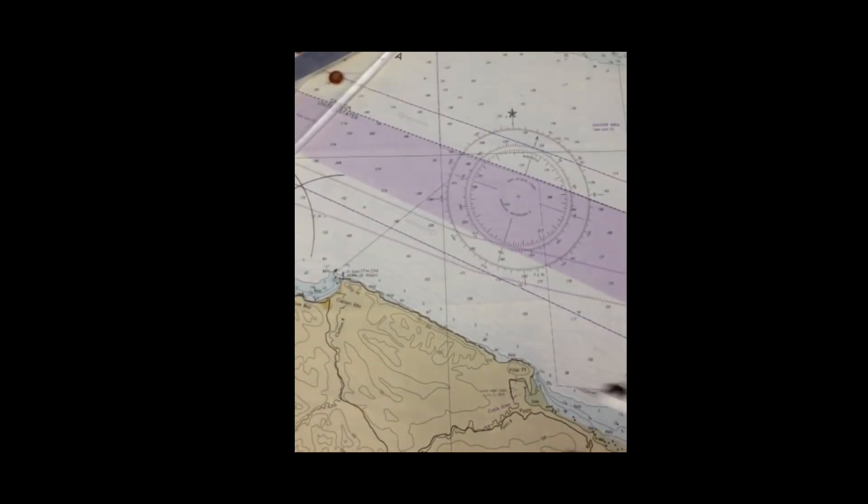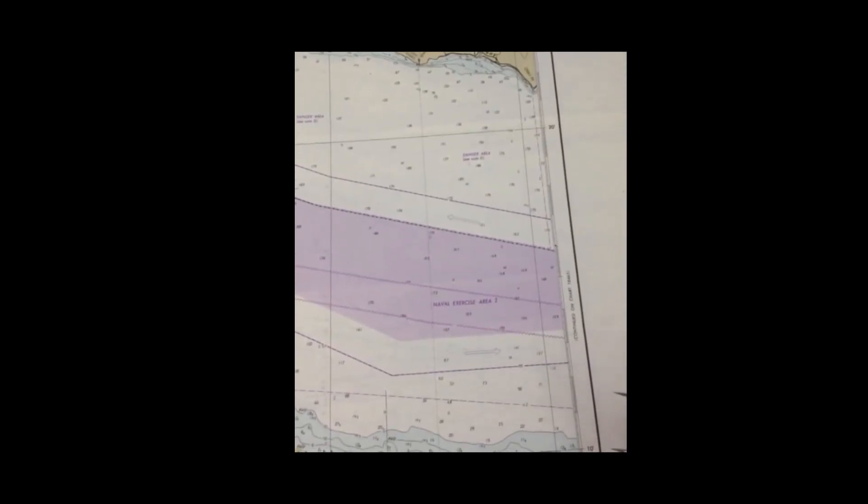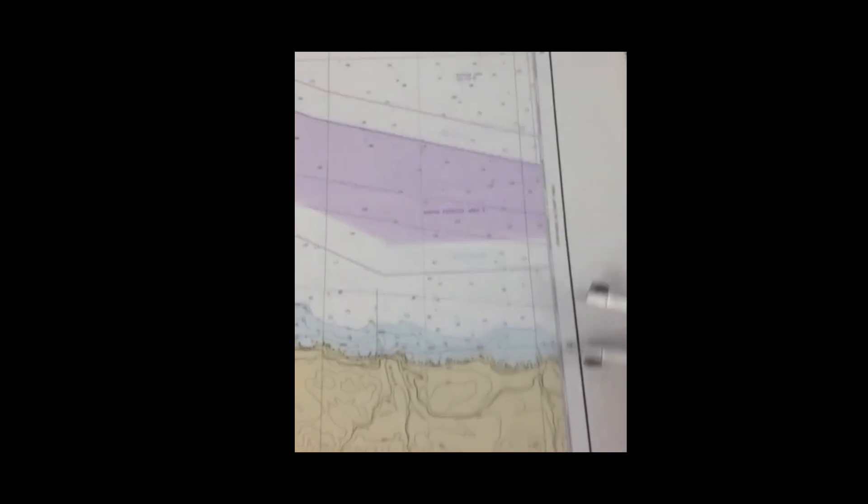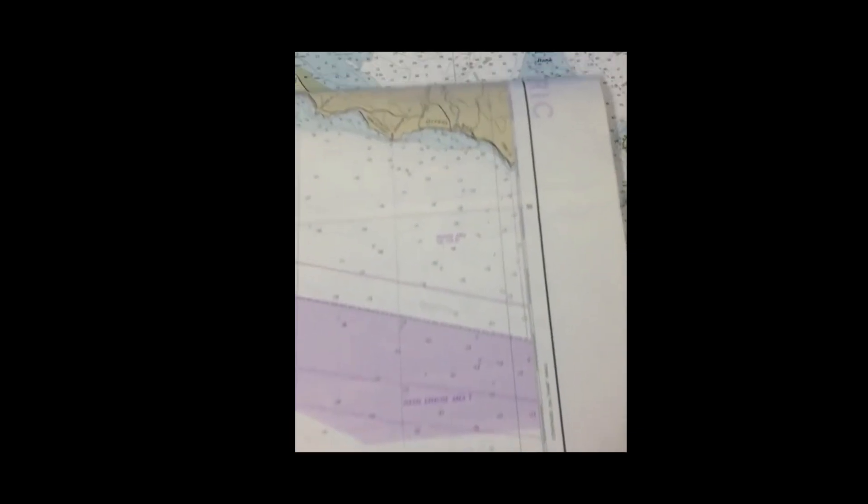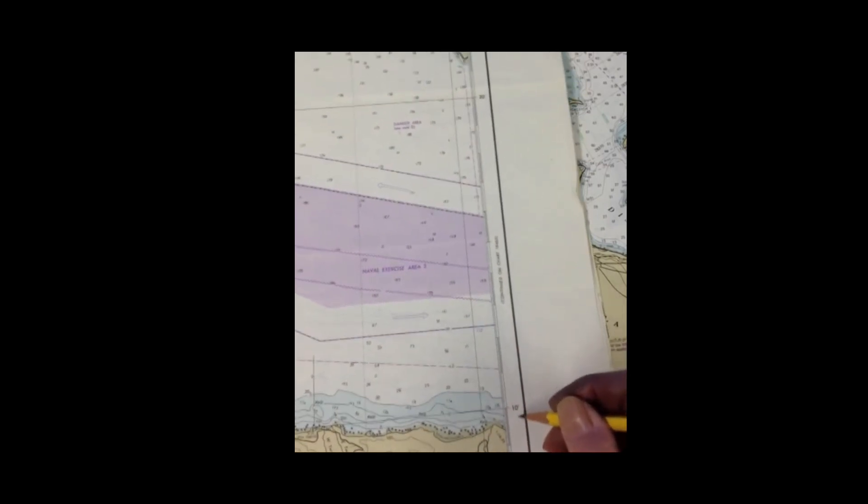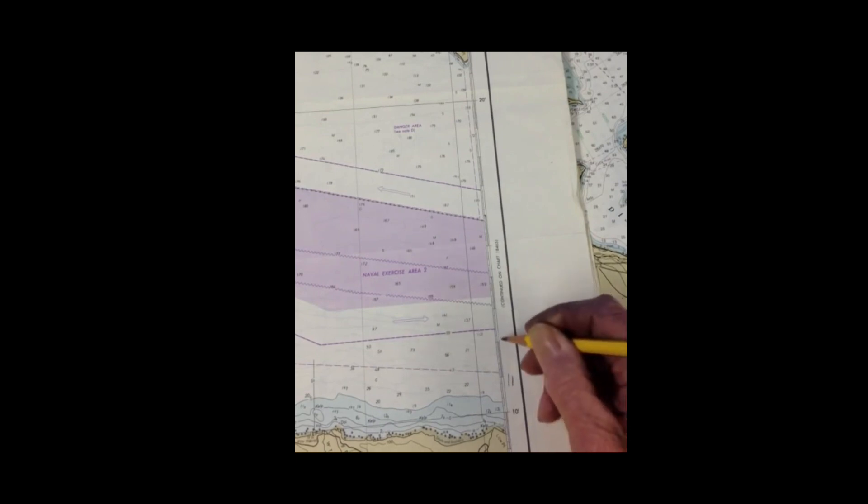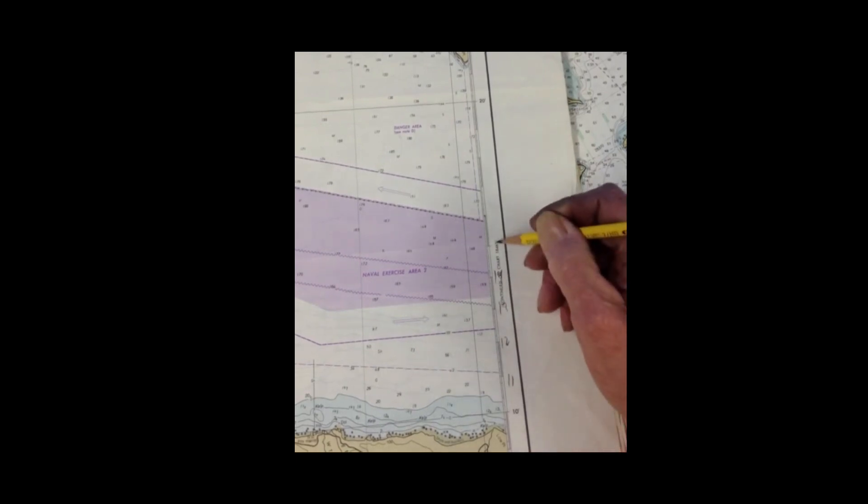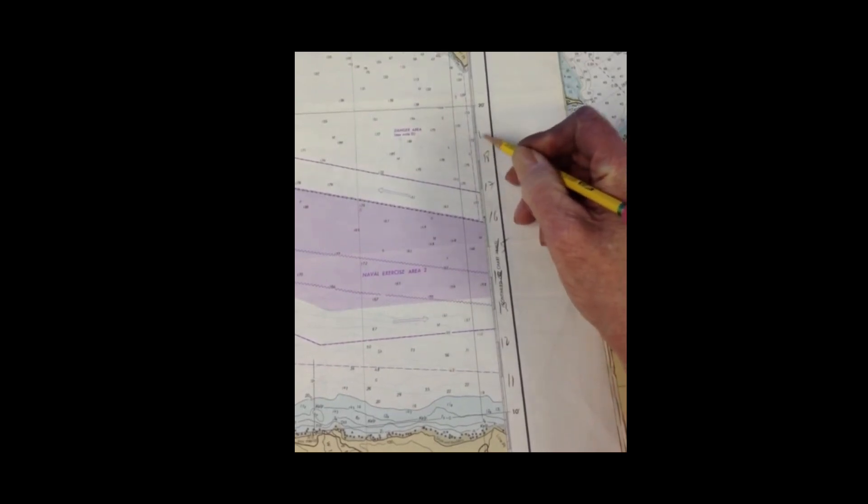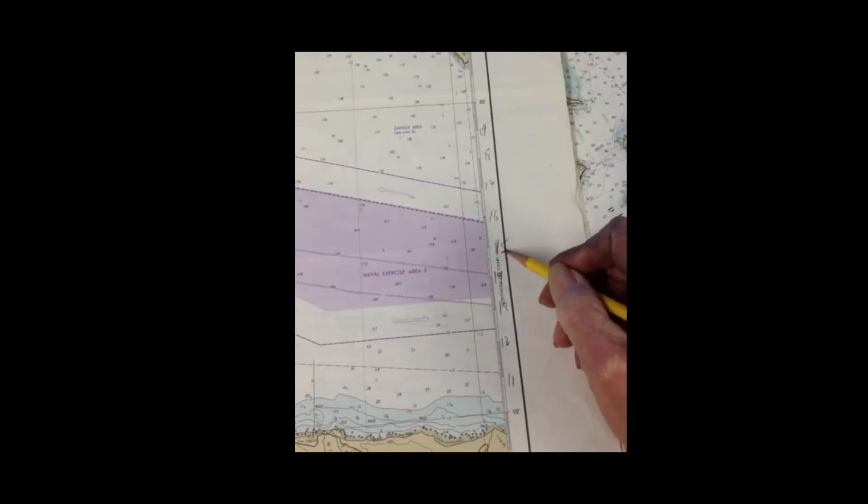Now the next job is we want 1.2 miles up that, and we get that off the miles, the latitude scale over here on the right. This is like 48 degrees 10 minutes. I think it's always best just so I don't have to measure those a second time, I'm just going to label it: 11, 12, 13, 14, 15, 16, 17, 18, 19. That's going to be handy for your plotting anyway in the future.